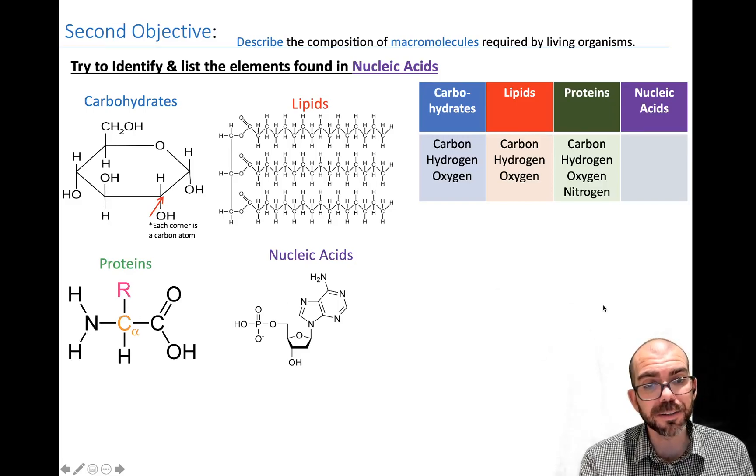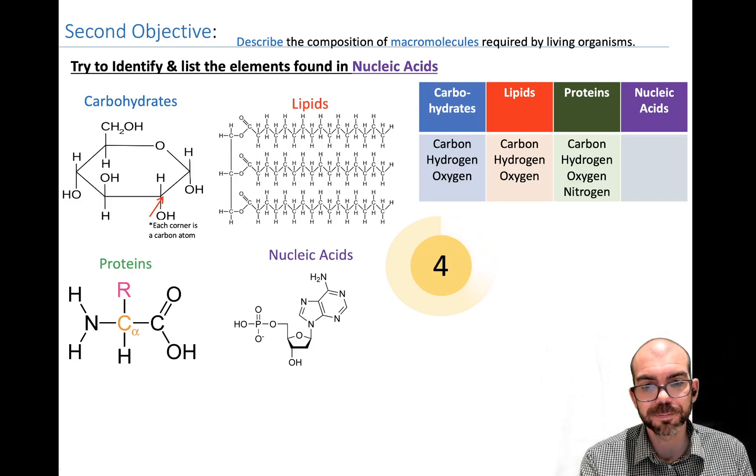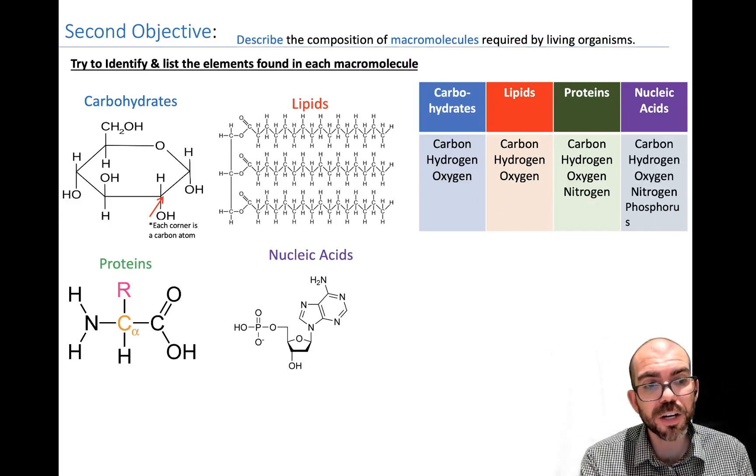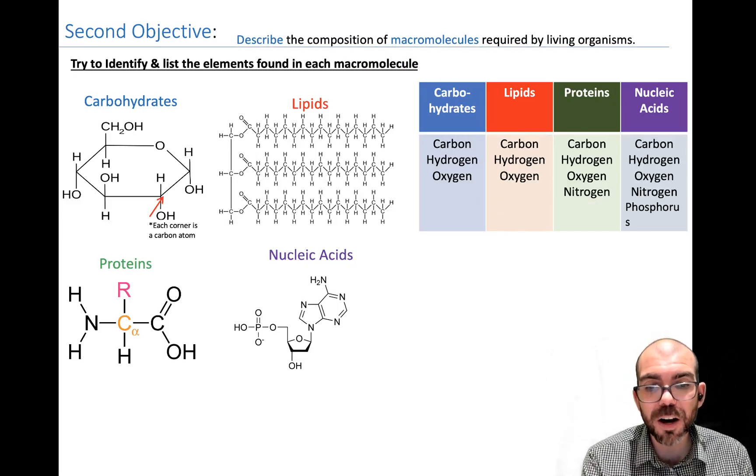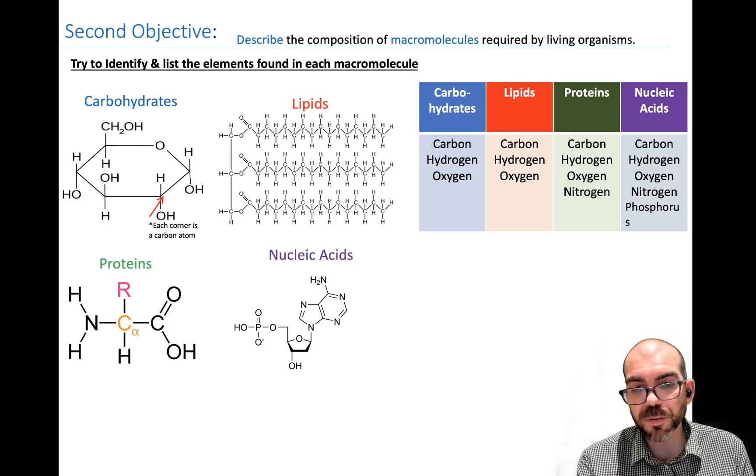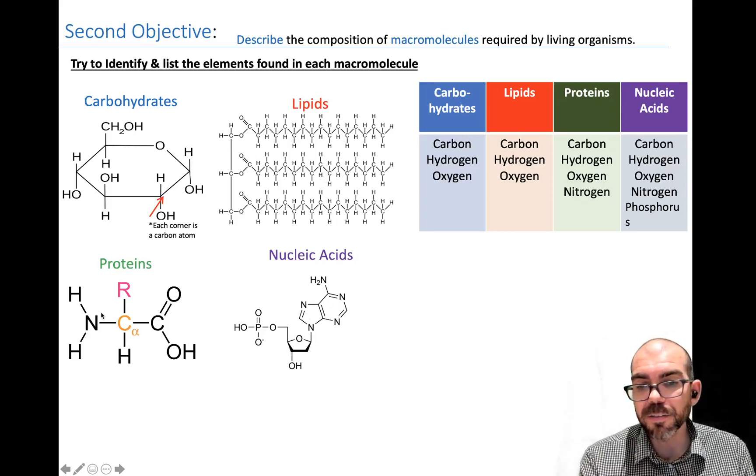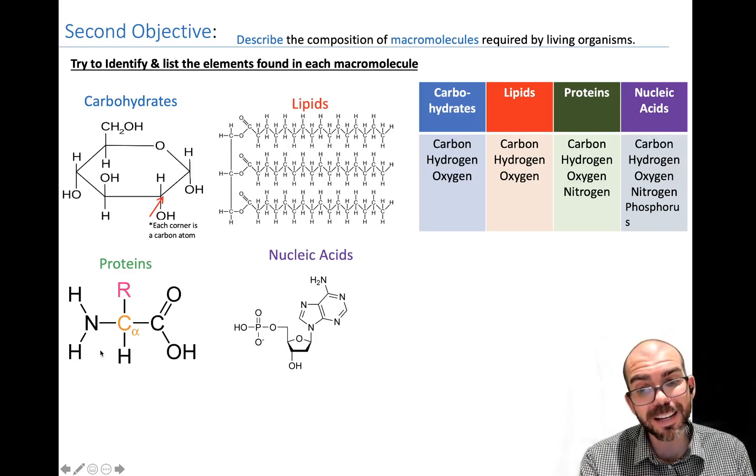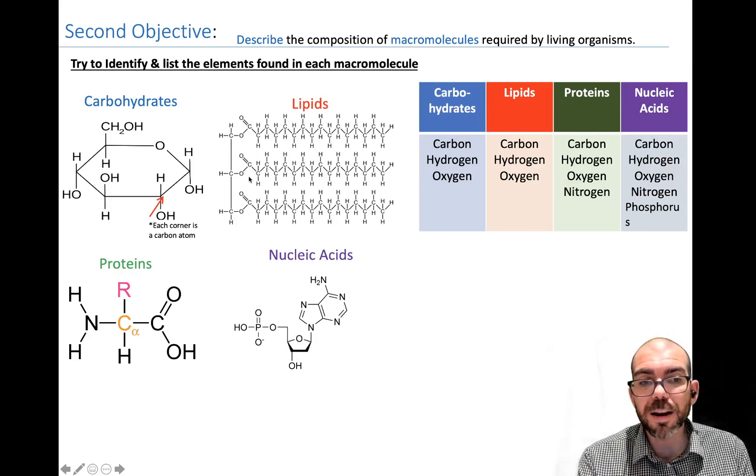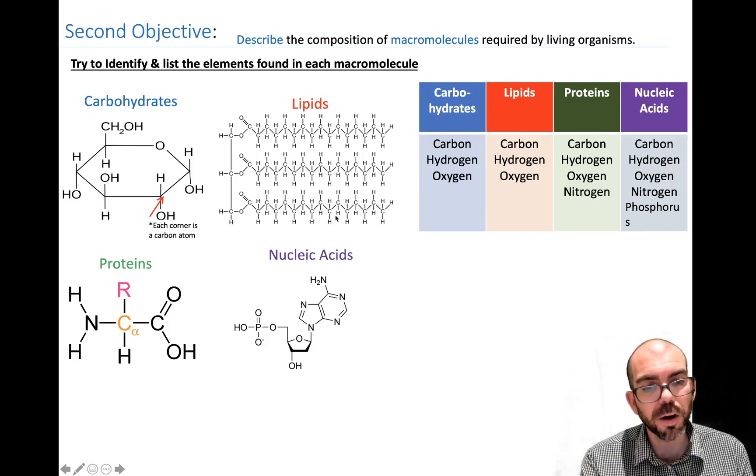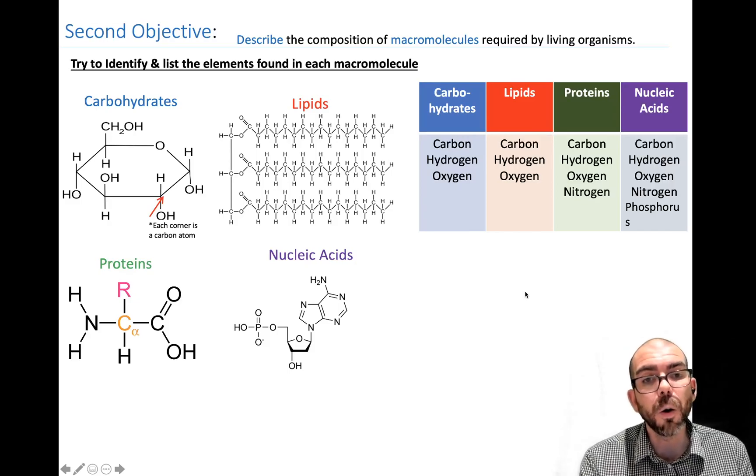Last one, what atoms are in a nucleic acid? A nucleic acid has carbon, hydrogen, oxygen, nitrogen, and phosphorus. It has all of these elements. So if you see nitrogen and phosphorus, you immediately know you're dealing with a nucleic acid. If you see carbon, hydrogen, and oxygen, and a nitrogen, it's a protein. And if you only have carbon, hydrogen, and oxygen, you need to look at the structure of each one to see if it's a carbohydrate or a lipid.